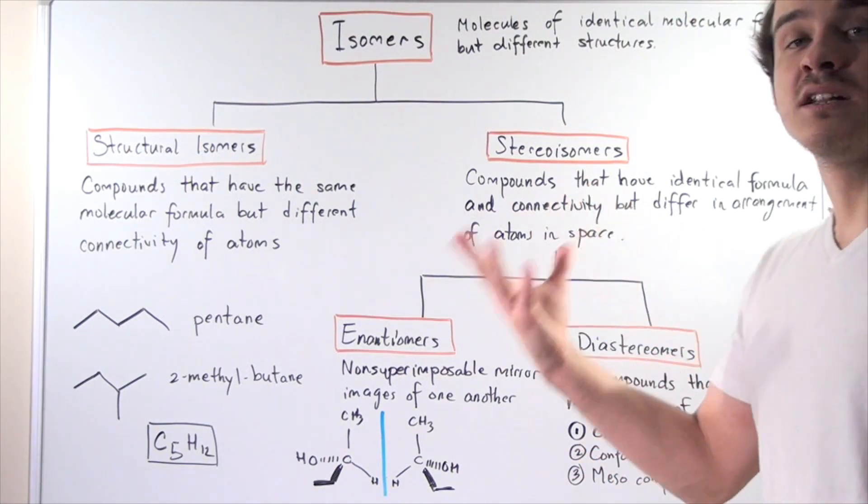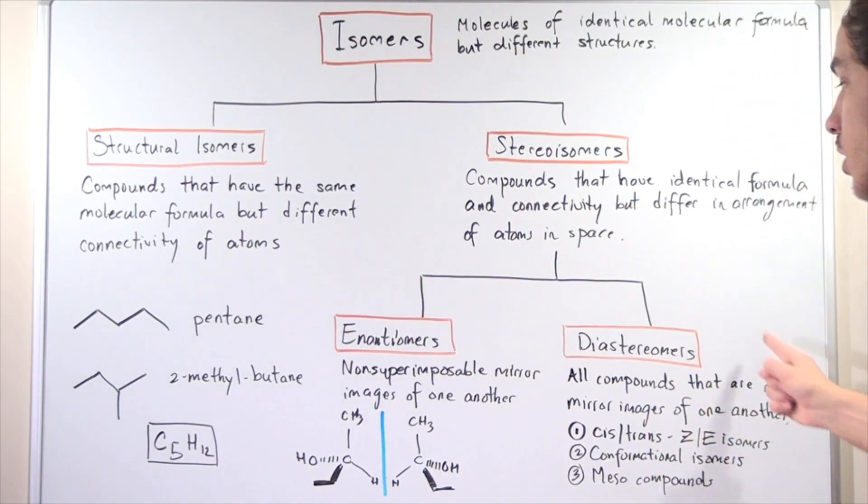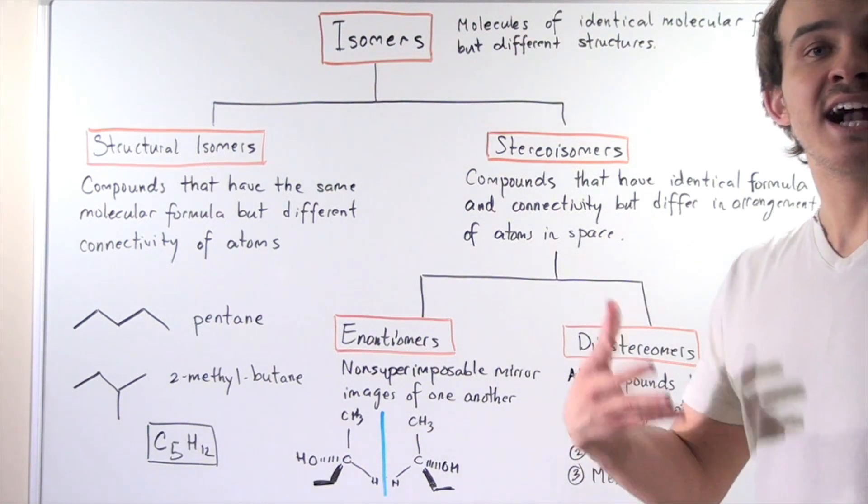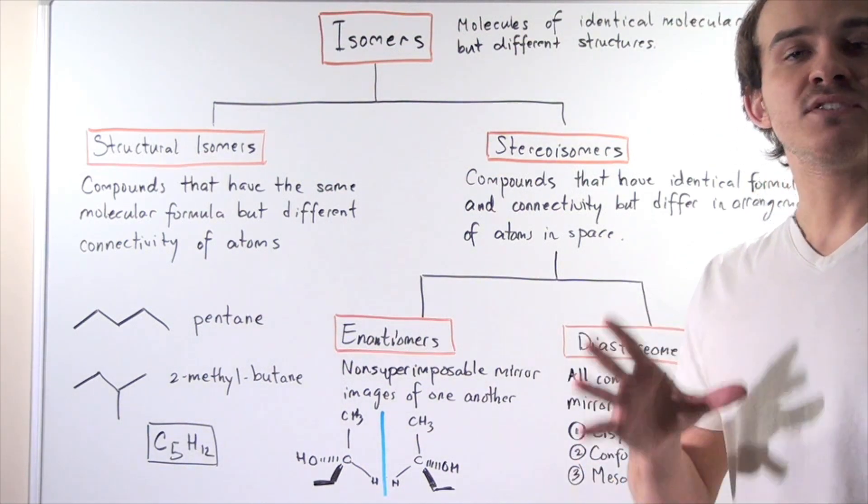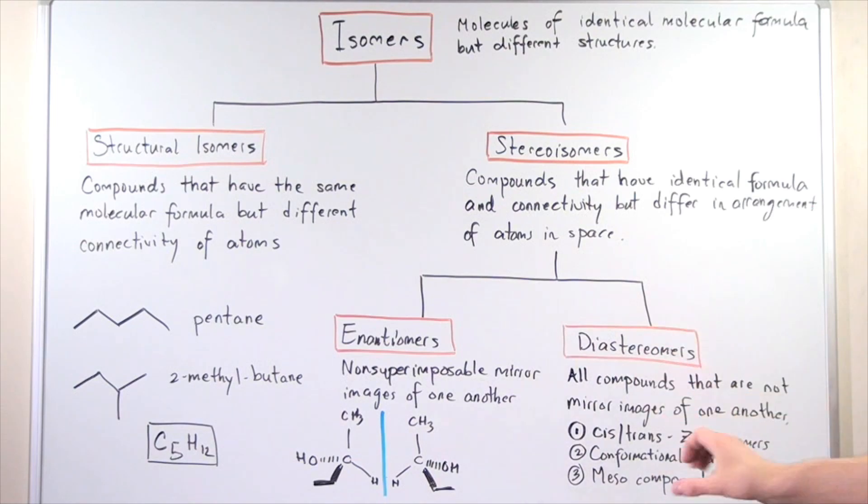Number two: conformational isomers. So eclipsed conformation or staggered conformation of a compound - these are diastereomers. Also, meso compounds. Meso compounds are achiral compounds that have stereogenic carbons. These are all examples of diastereomers.